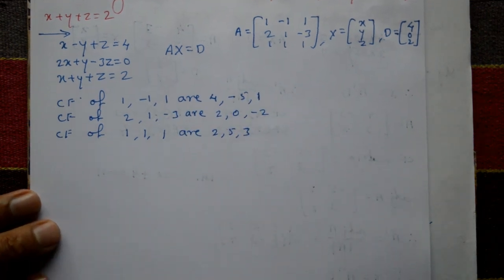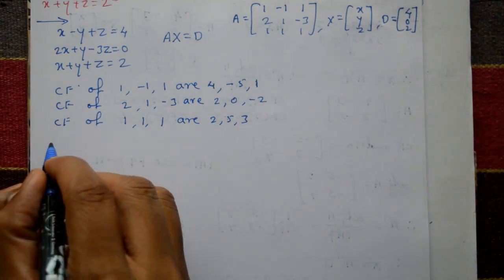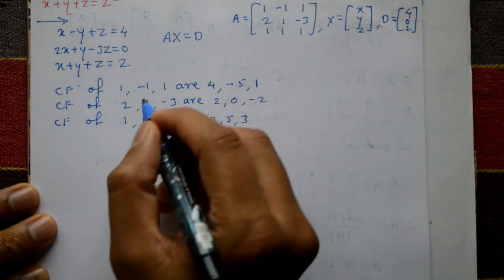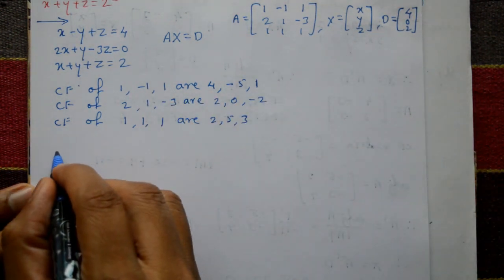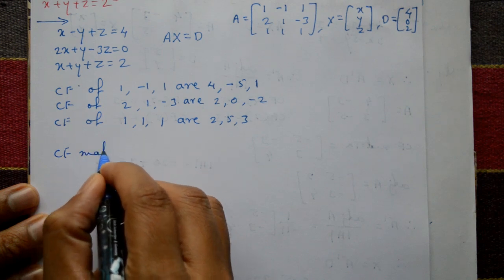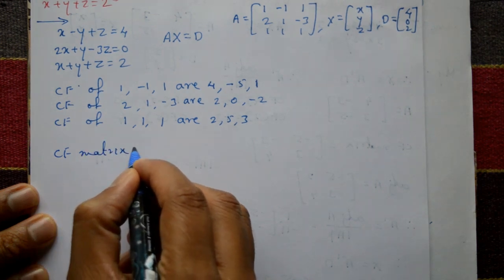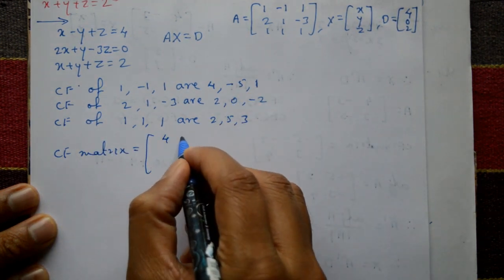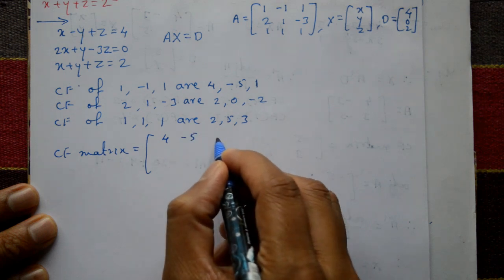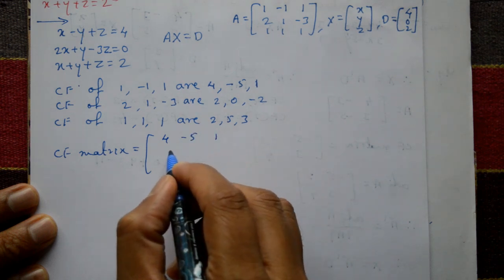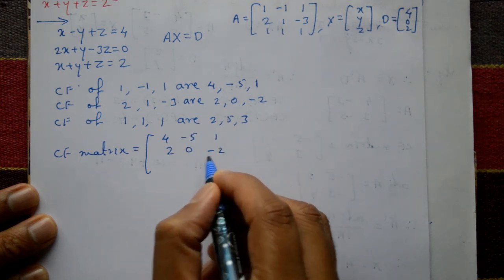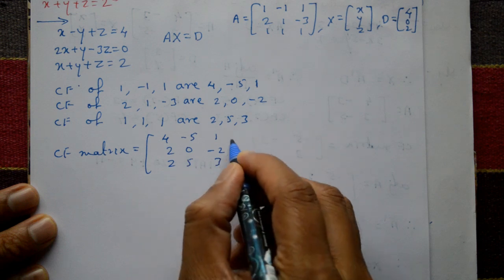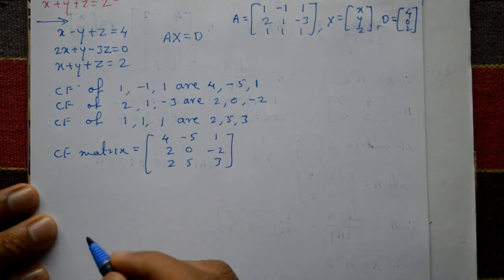Now the co-factor matrix is formed by taking these elements: first row 4, -5, 1; second row 2, 0, -2; third row 2, 5, 3.